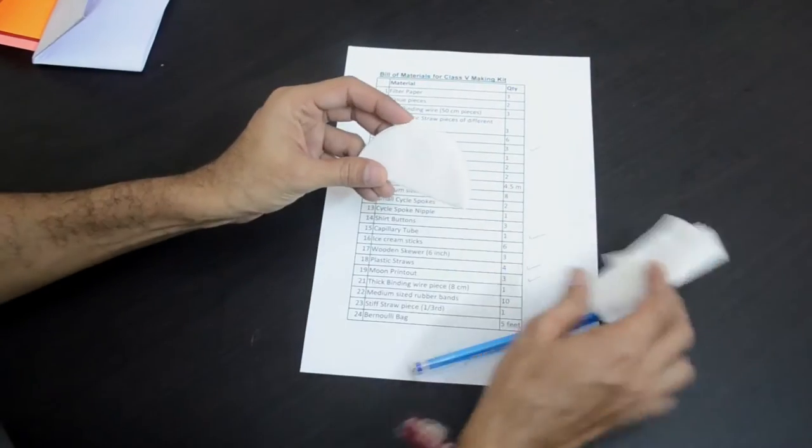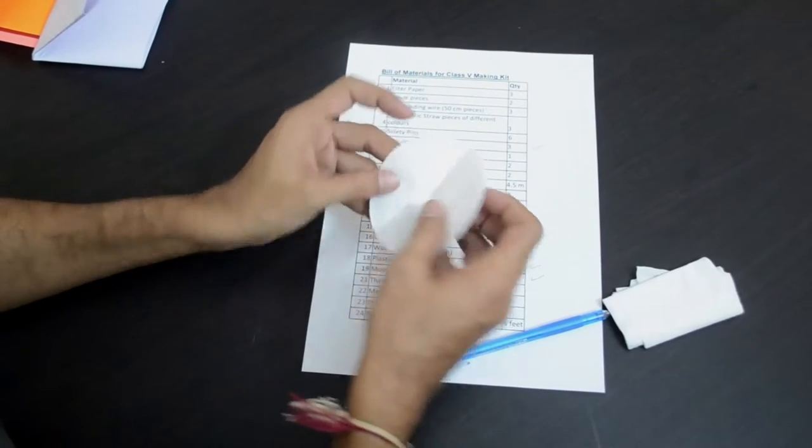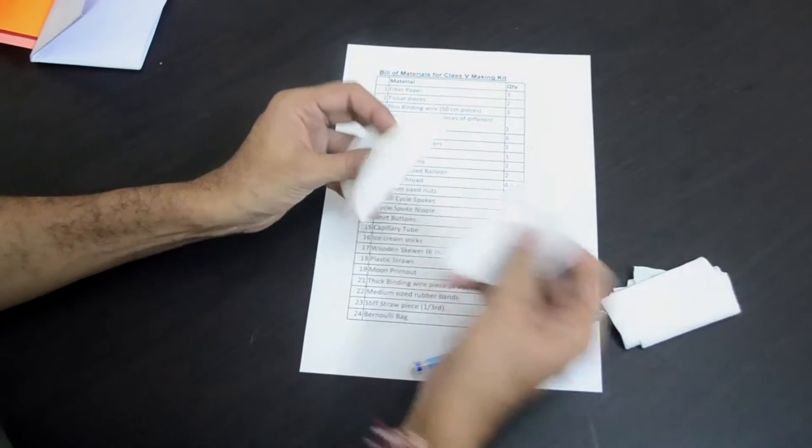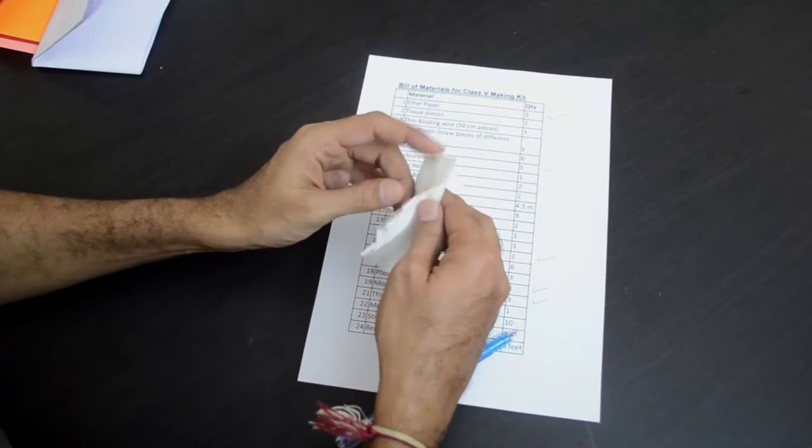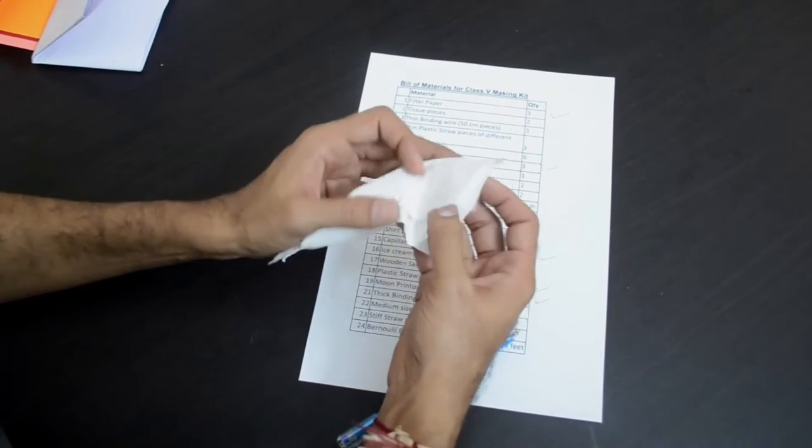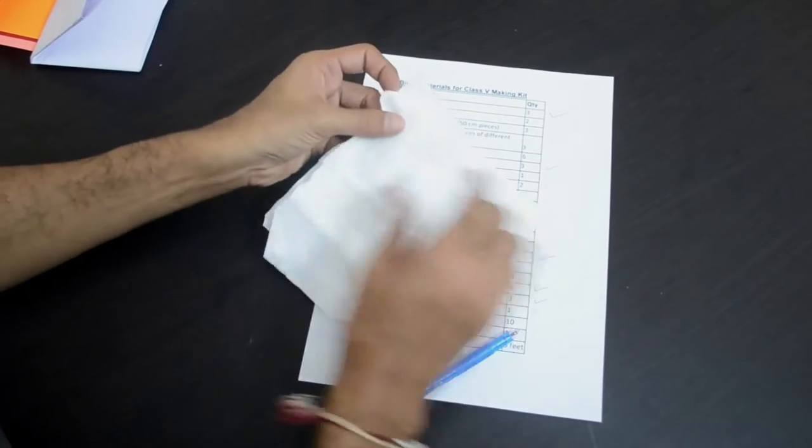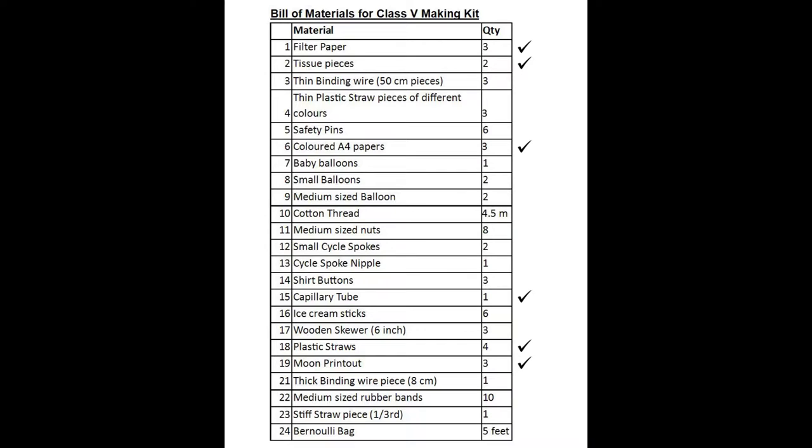Continuing with the papers, you will also find these circular shaped filter papers, 3 of them which is item number 1 in our list, 3 filter papers. And we also have these tissue pieces, there are 2 of them. You will need these for the paper chromatography activity.